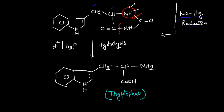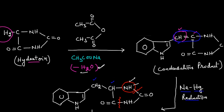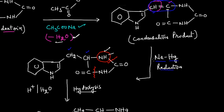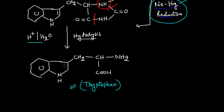So by Hydantoin Synthesis, we can prepare Tryptophan Amino Acid by using this hydantoin — that is the condensation of the aromatic aldehyde with hydantoin in the presence of acetic anhydride and sodium acetate, followed by reduction and hydrolysis, which will give you the alpha amino acid. This particular amino acid is known as Tryptophan, and by this we can prepare Tryptophan by the Hydantoin Synthesis.